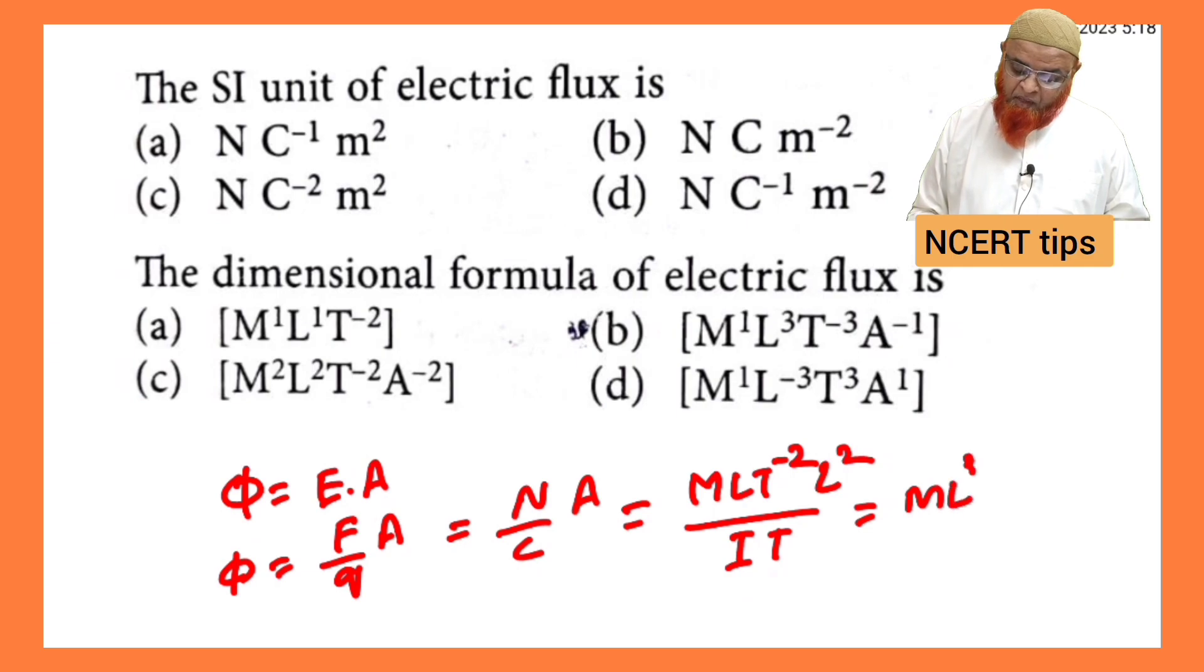Then you can write here ml cube T comes to the numerator, becomes T power minus 3, and in the denominator A is there. A means current, which means ampere. It comes to the numerator as A power minus 1.